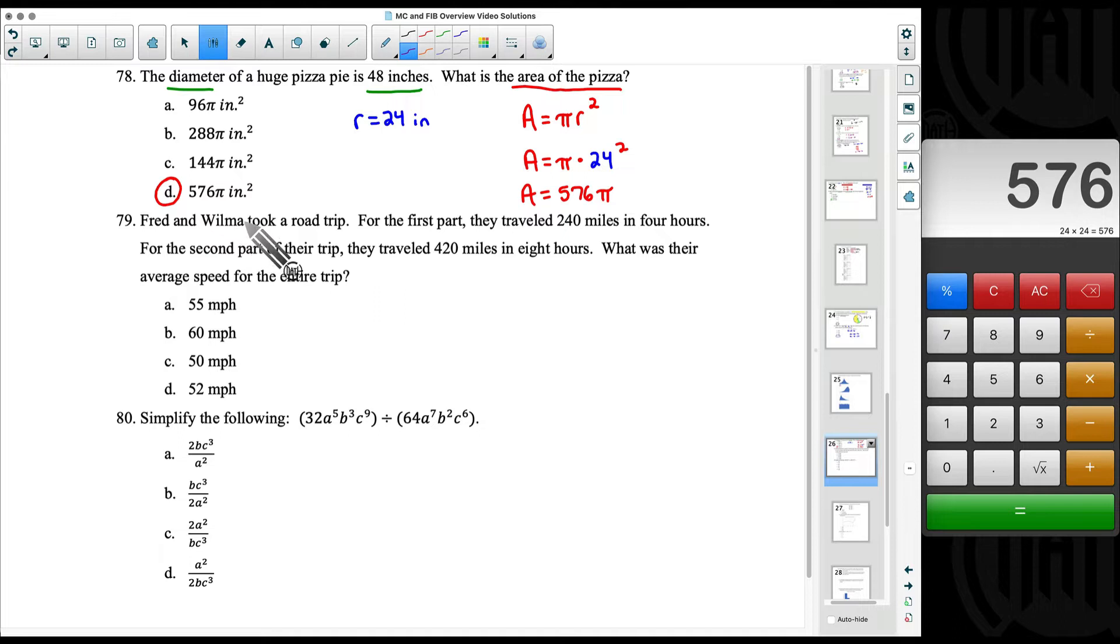Number 79. Fred and Wilma took a road trip. For the first part they traveled 240 miles in 4 hours. For the second part of the trip they traveled 420 miles in 8 hours. What was their average speed for the entire trip?